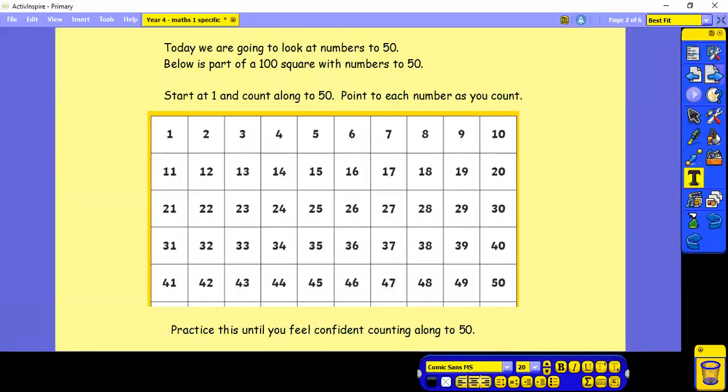So today we're going to start looking at numbers to 50. We're going to move from the number line to 30 to part of a 100 square with the numbers up to 50. The first thing we're going to do is start at 1 and count along to 50. Point to each number as you count. Practice this until you feel confident counting along to 50.